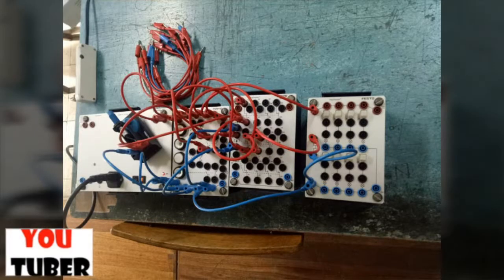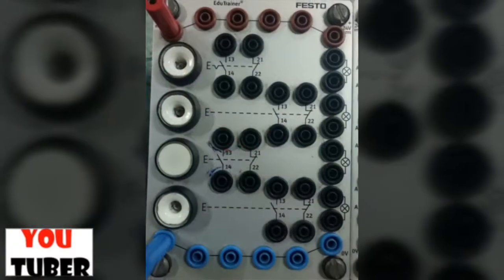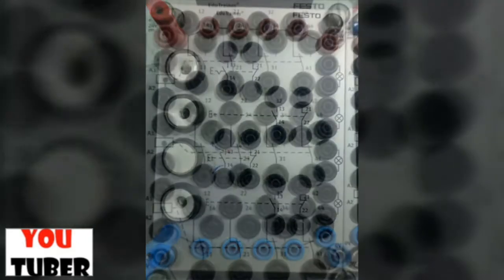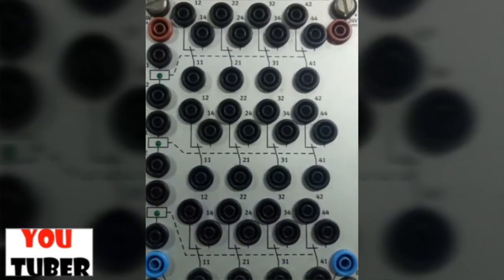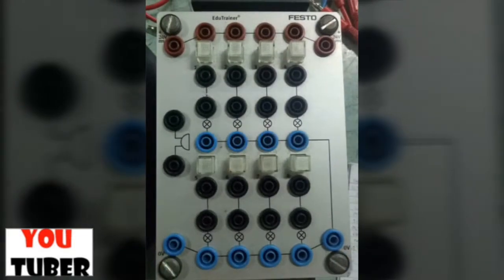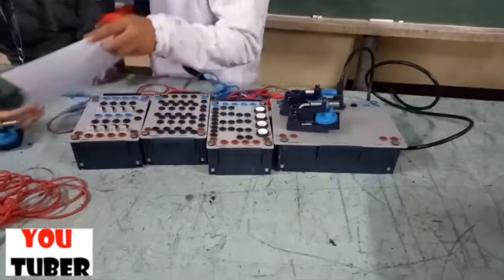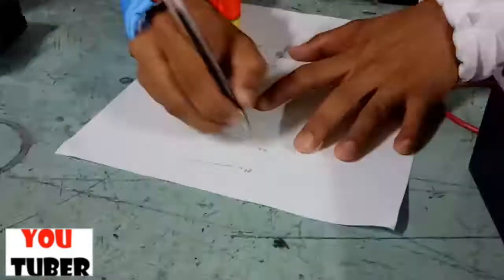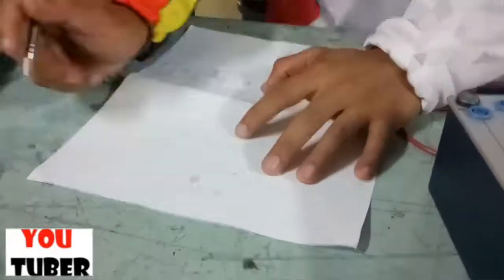So this is the electroneumatic training module and it has four parts: first is the power, the switch, the relay, and the output - that's the buzzer and the lamp. Before setting up a circuit in the module, you need to have a circuit diagram first as your guide.